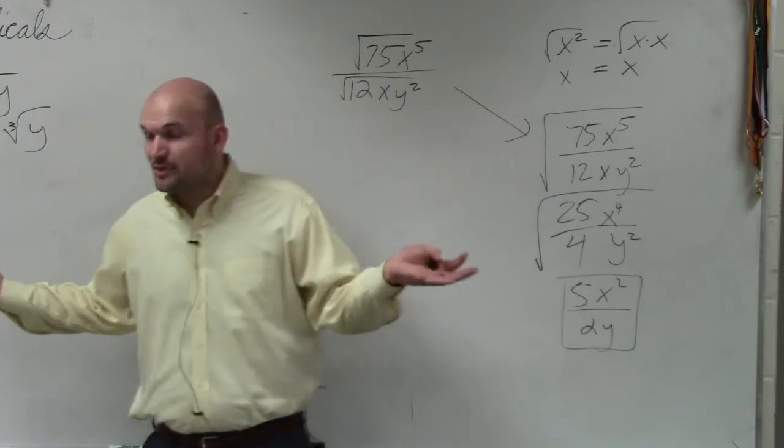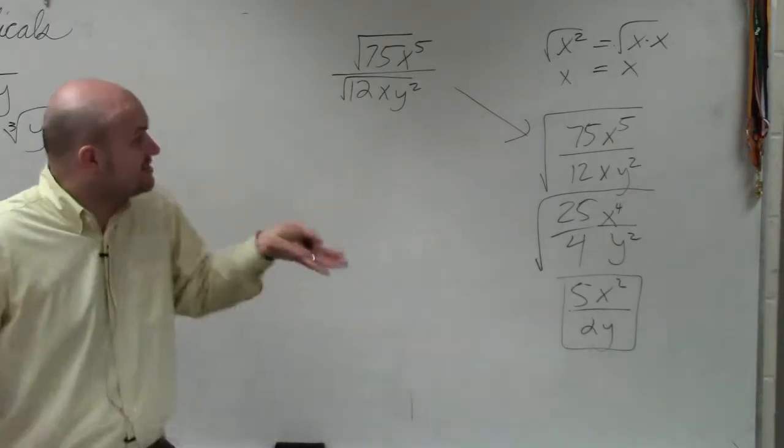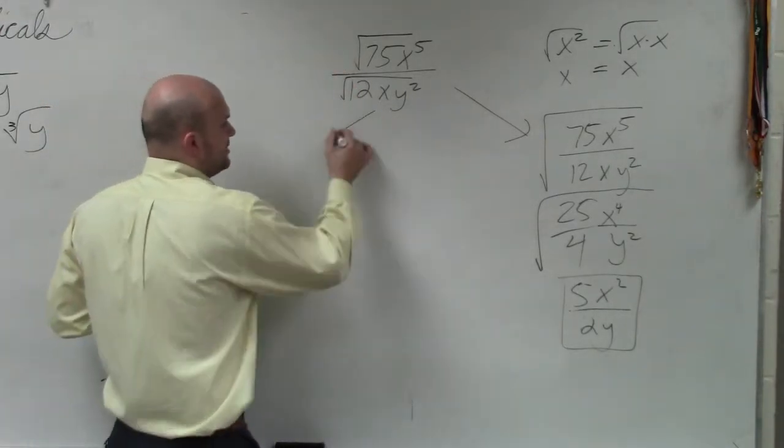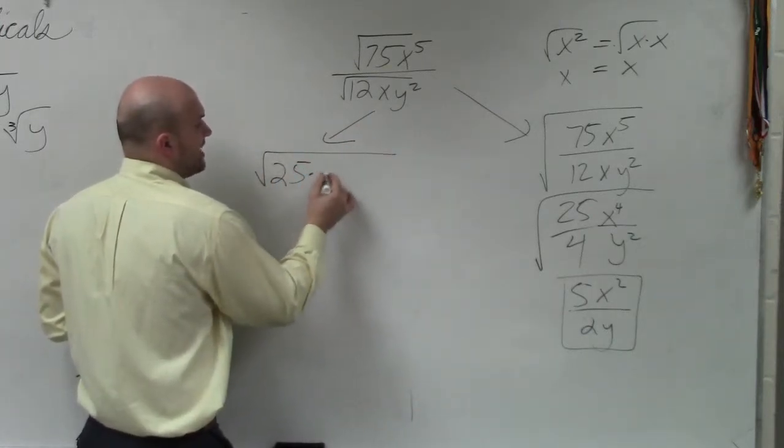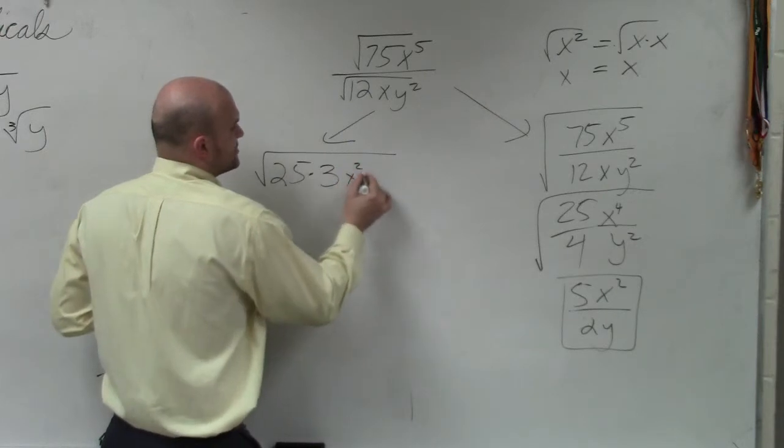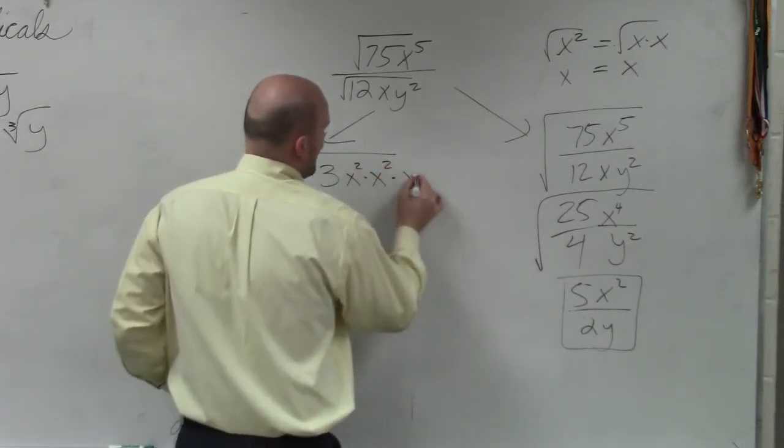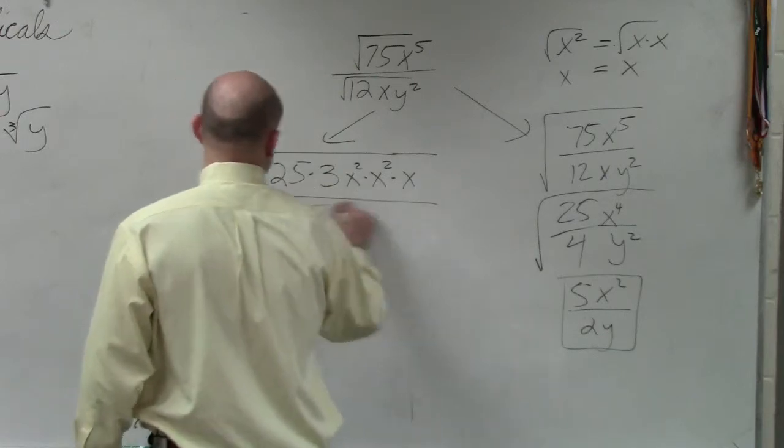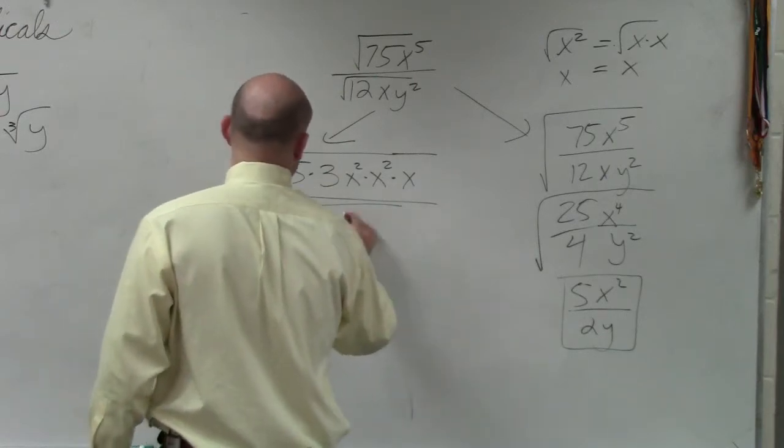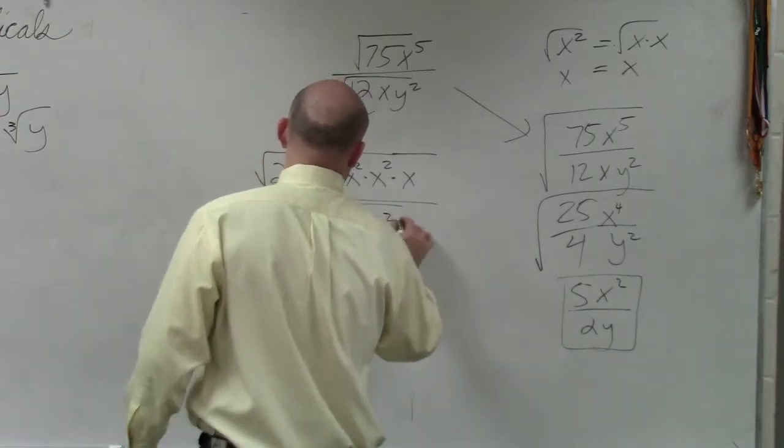However, this isn't really the way that I kind of showed you. I also said, hey, you guys can simplify each of these, right? So if you were to simplify each one, the other way to do it, which is perfectly fine, is to rewrite this as 25 times 3 x squared times x squared times x, all over the square root of 4 times 3 times x times y squared, right?